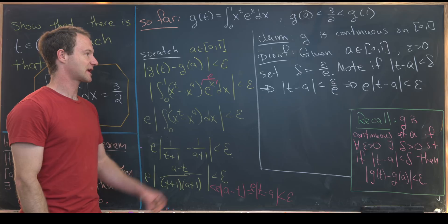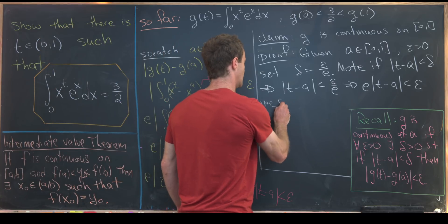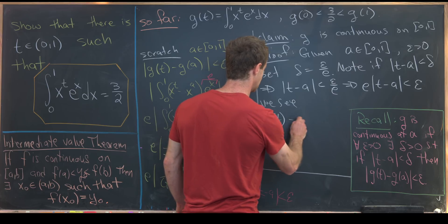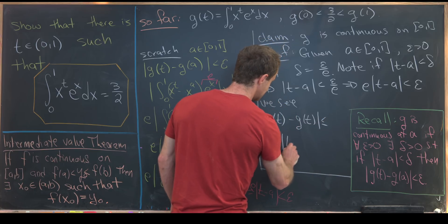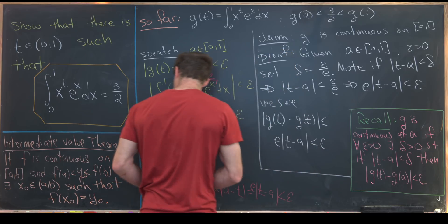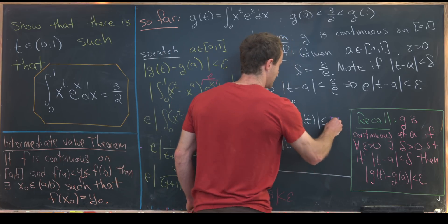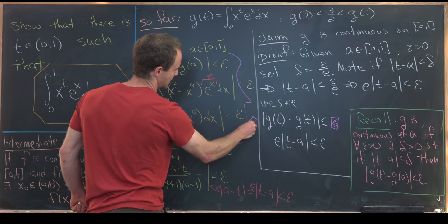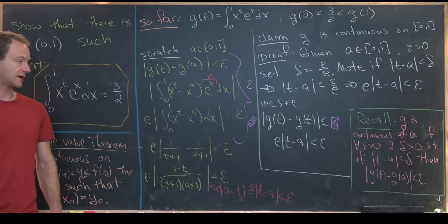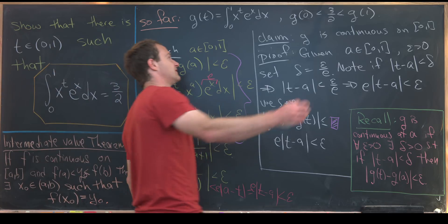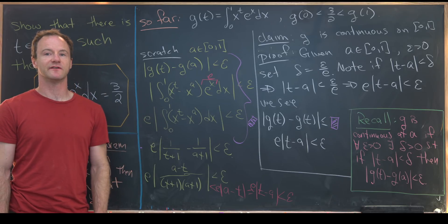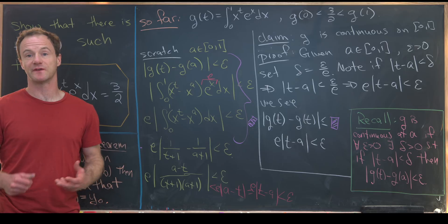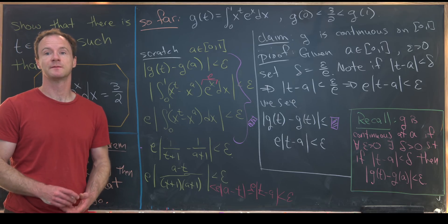Then by this entire calculation right here, we see that the absolute value of g of t minus g of a is less than or equal to e times the absolute value of t minus a, which is less than epsilon, where this box is filled with something which is mimicking this calculation over here. Okay, so in the end we have that g is continuous on 0, 1. That combined with the fact that g of 0 is less than 3 halves and g of 1 is greater than 3 halves allows us to apply the intermediate value theorem and bring into existence this special value of t where g of t equals 3 halves. And that's a good place to stop.